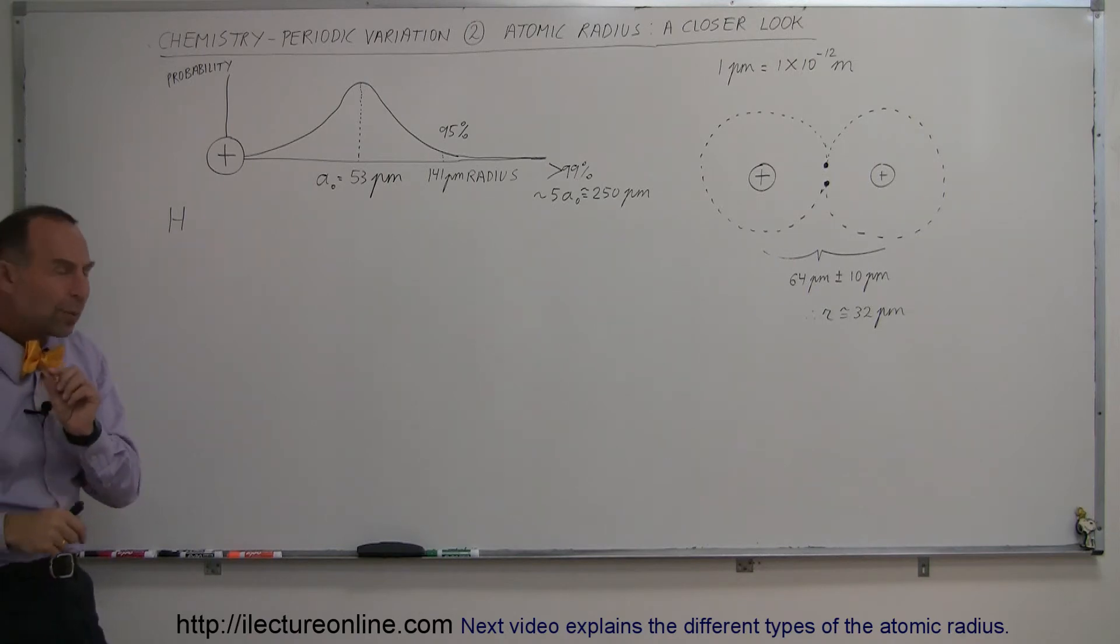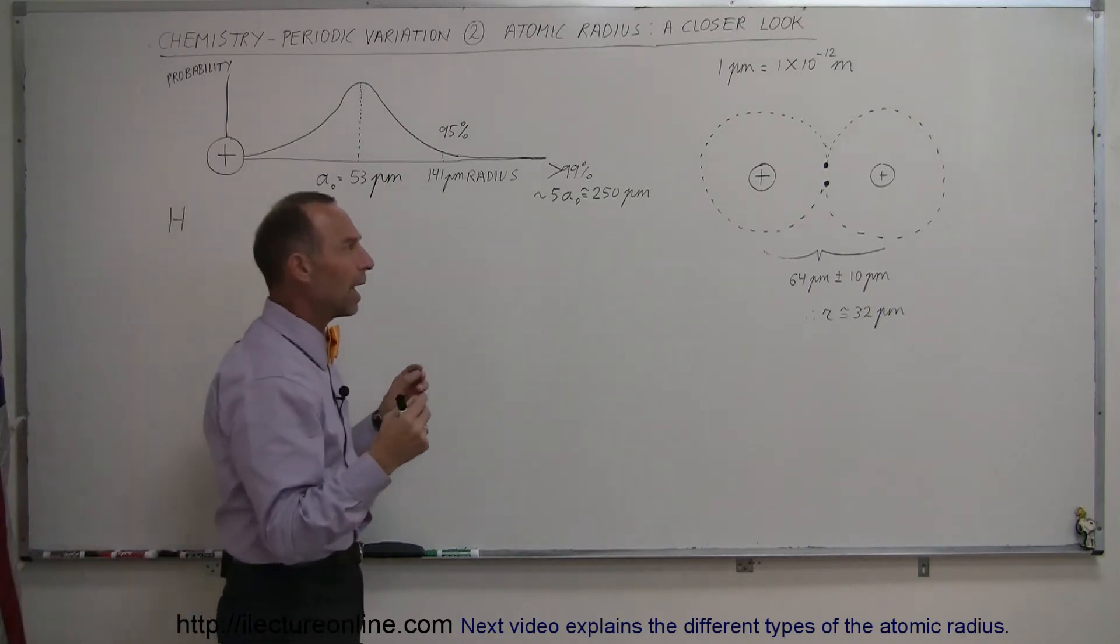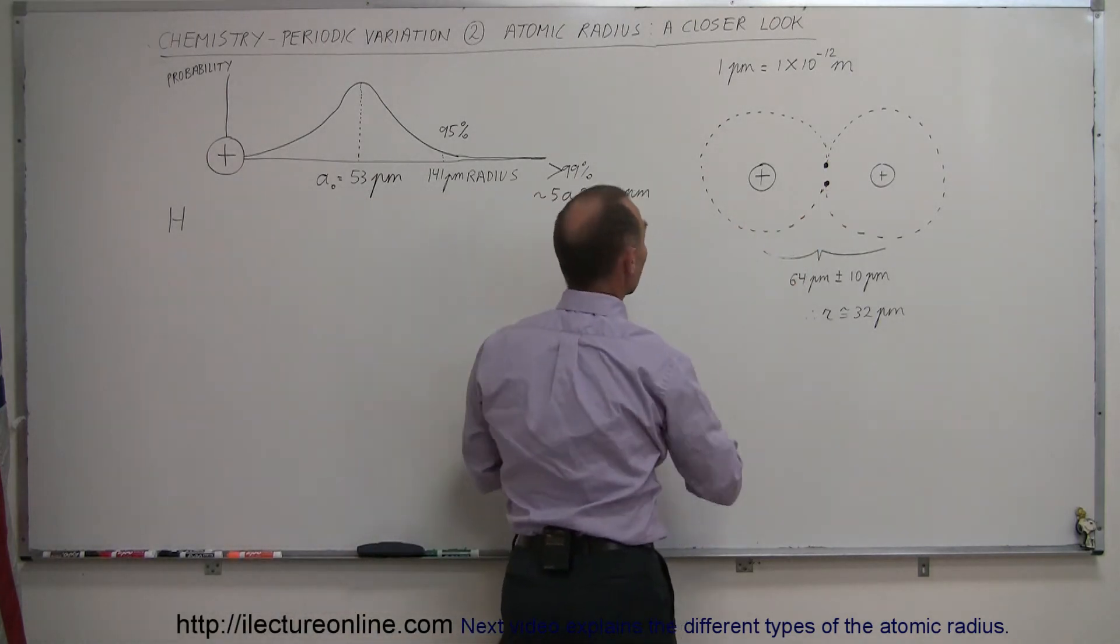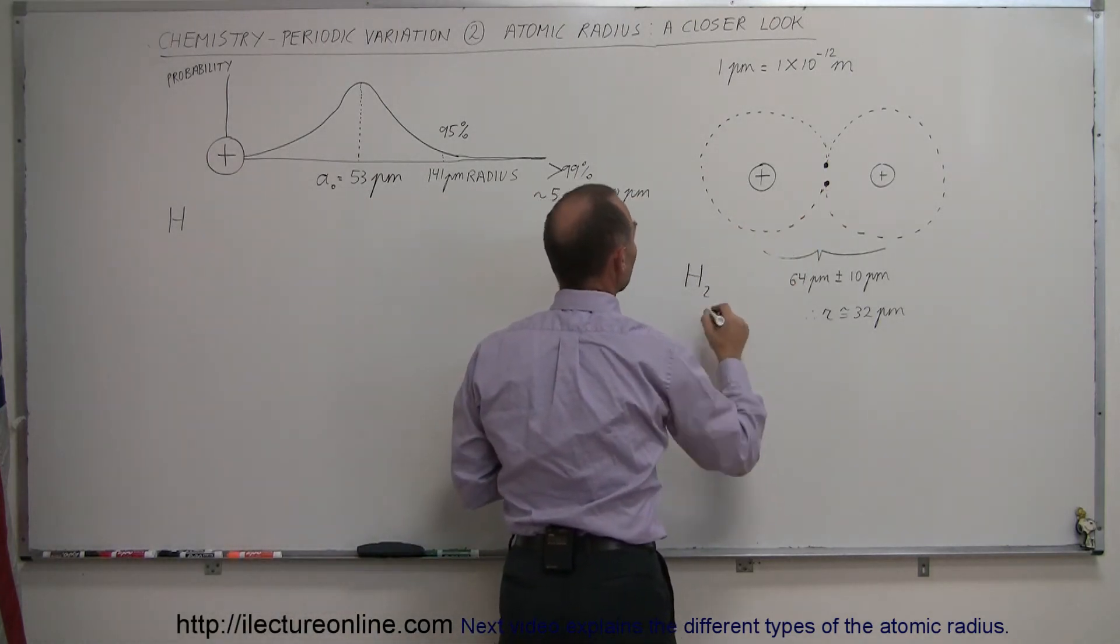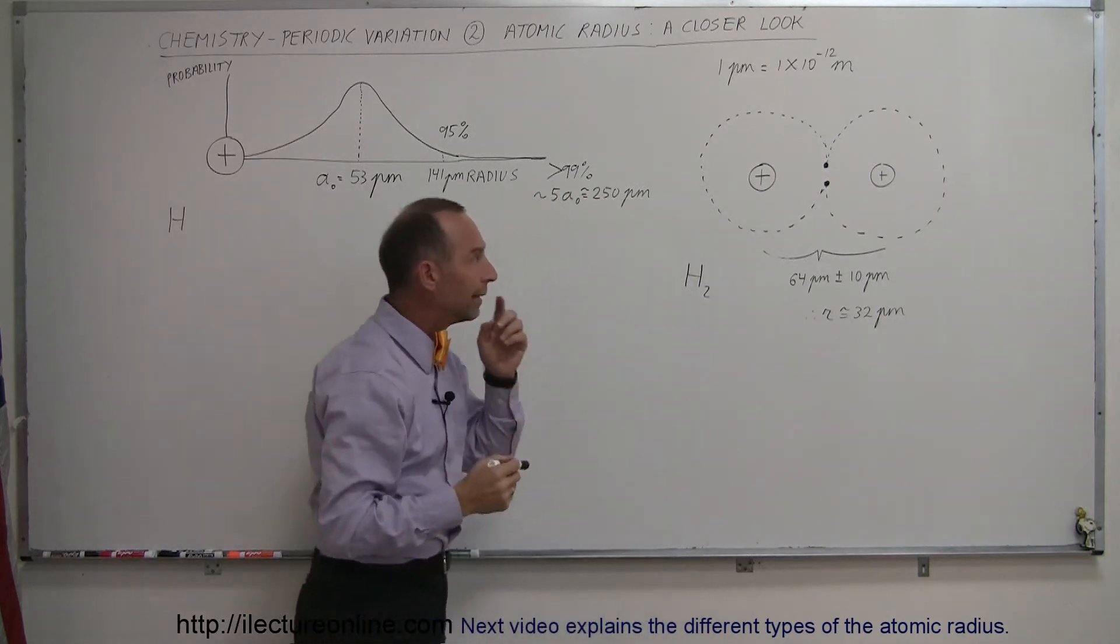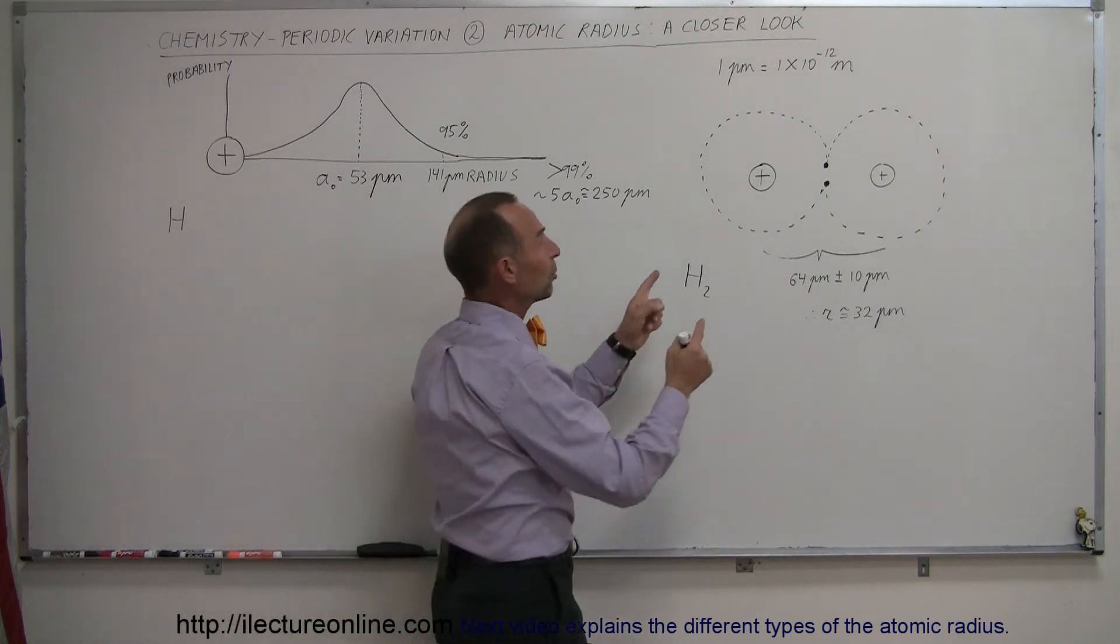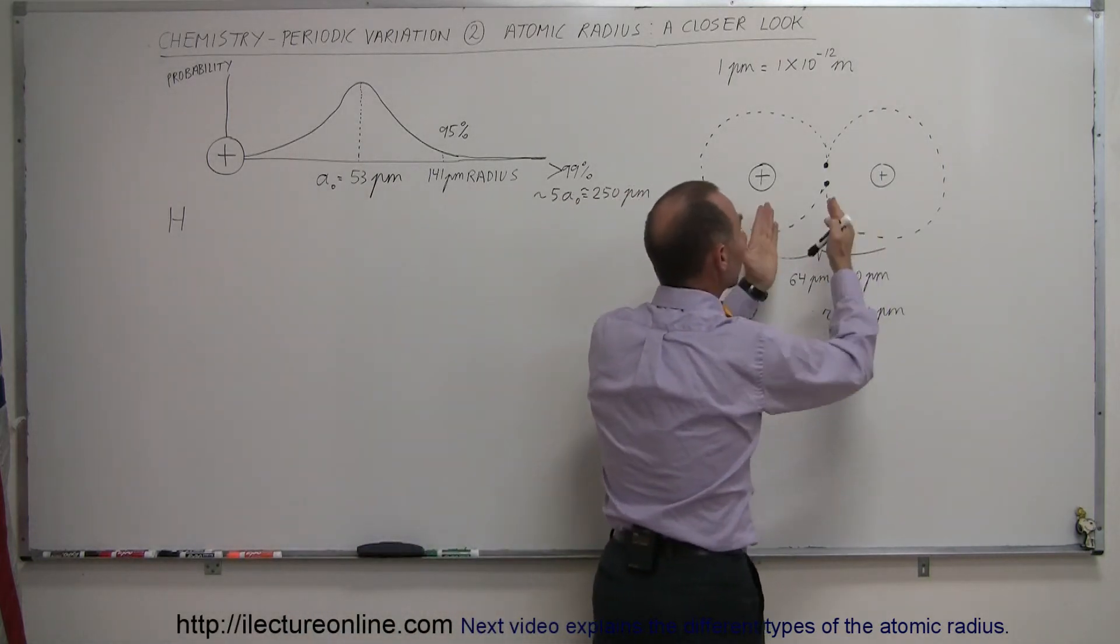Now, in places where we can do a little better job is, for example, when atoms bond to other atoms. For example, when a diatomic hydrogen molecule, if we have H2, like this, a gas molecule, then we can actually do a better job in measuring the distance between the nuclei.